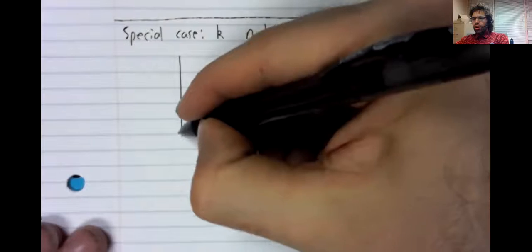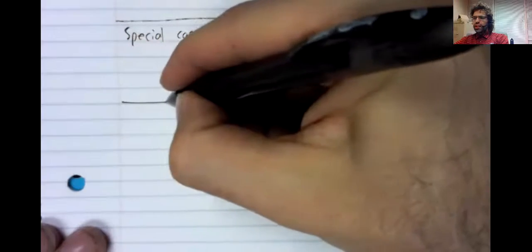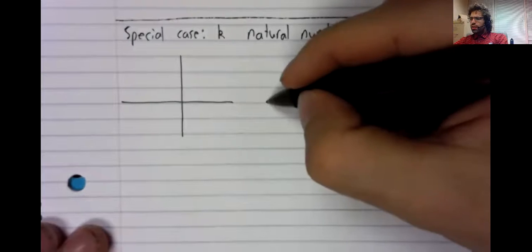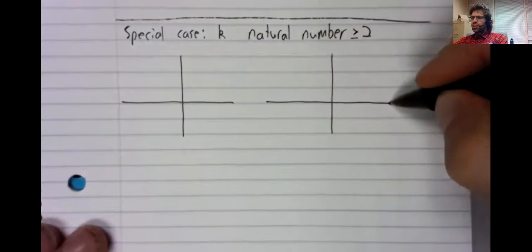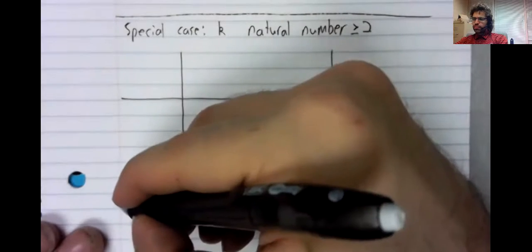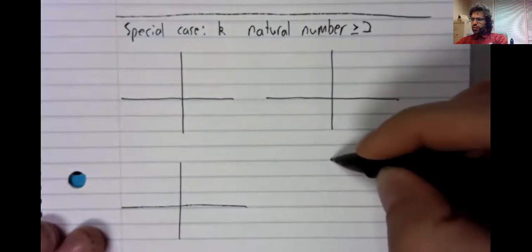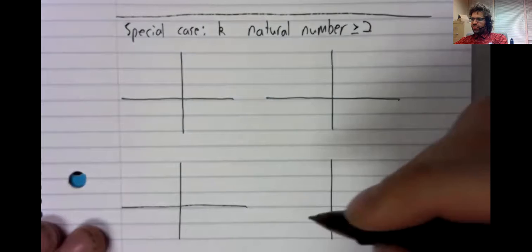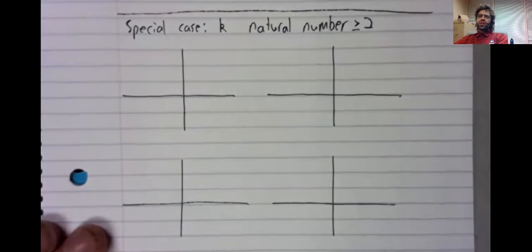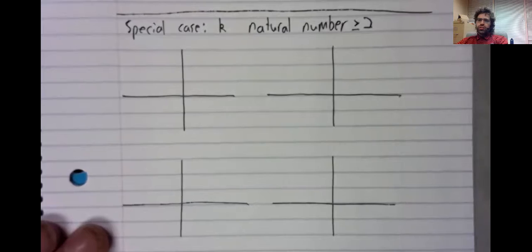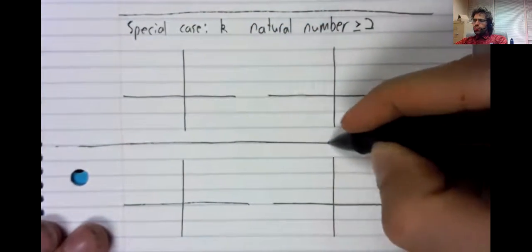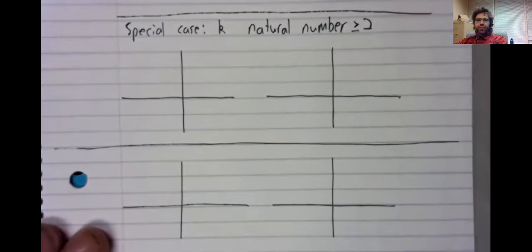And instead of having all of those cases, we have essentially four graphs. And all we're going to do as far as power functions go is that we're going to show you these graphs.